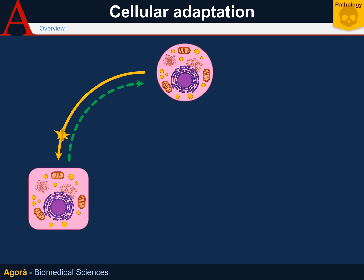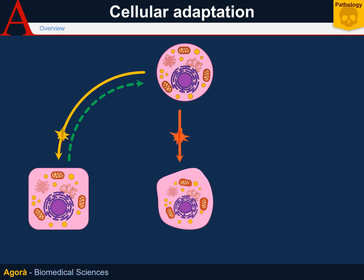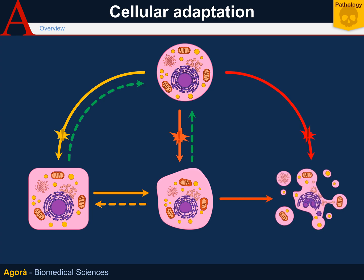Cell damage is instead a more severe condition, occurring when the cellular adaptation can't contain the damage anymore, thus resulting in cell disruption. Cell damage can be reversible — by eliminating the damaging stimulus, the cell may restore its initial status. After cellular adaptation, cell death may also occur. Finally, in the event of irreversible cell damage, cell death occurs, which is an irreversible process.